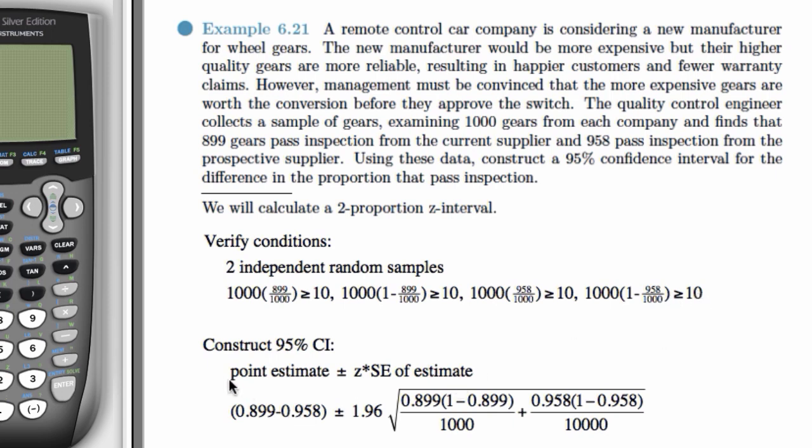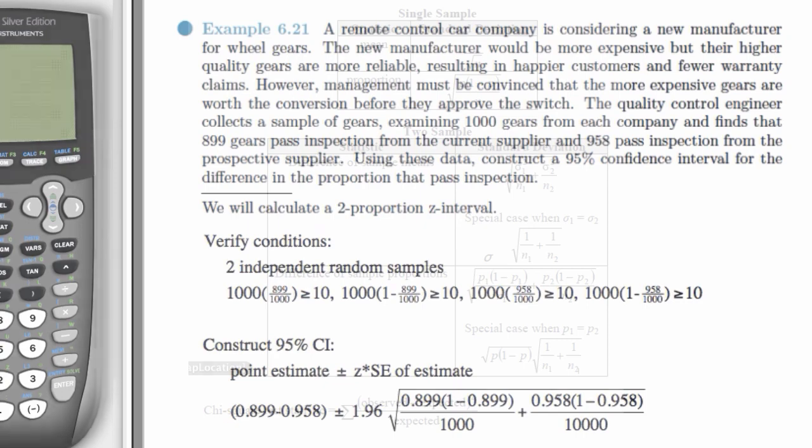And now we construct our confidence interval. So we have our point estimate is P1 minus P2, plus or minus Z-star times the square root of P1 times 1 minus P1 over N1, plus P2 times 1 minus P2 over N2.